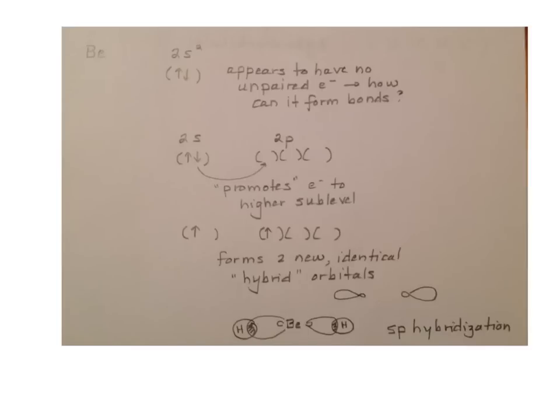We're going to work our way across the second period of the periodic table and look at the elements. If we look at beryllium, it's 2s2. Well, it has no unpaired electrons, so how can it form a bond?